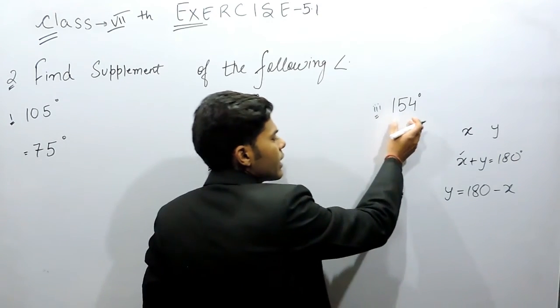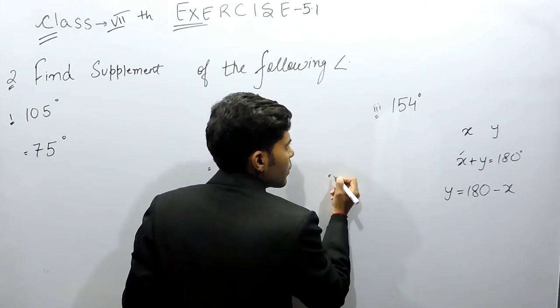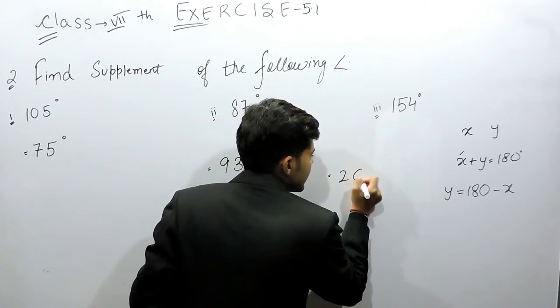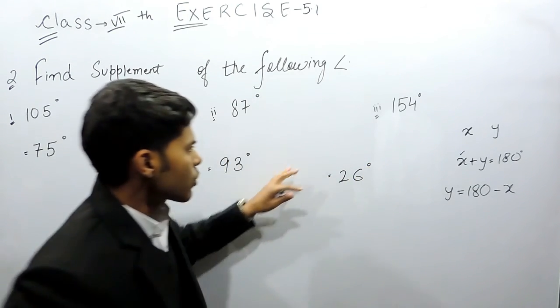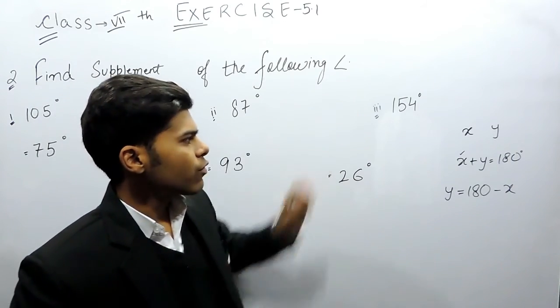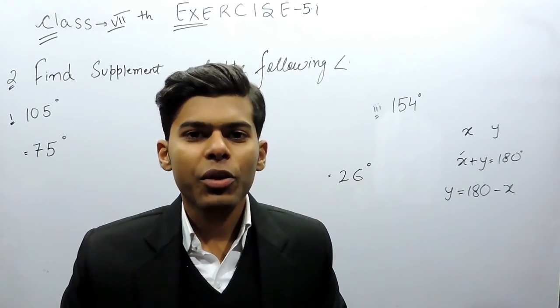And here again 180 minus 154, that will be equals to 26 degrees. So these are the supplements of these following angles. This is how you can solve this question. Thank you.